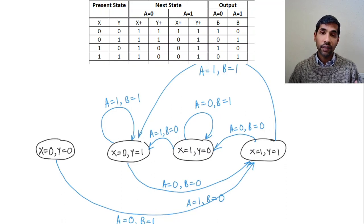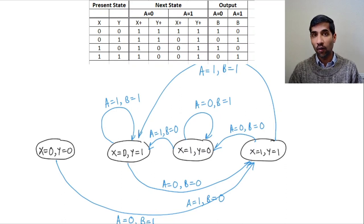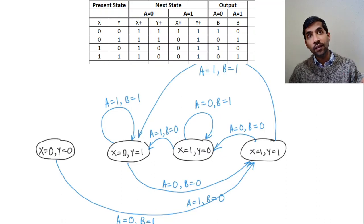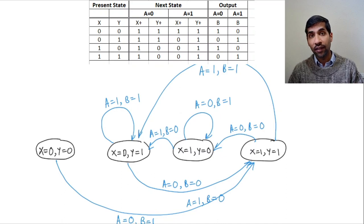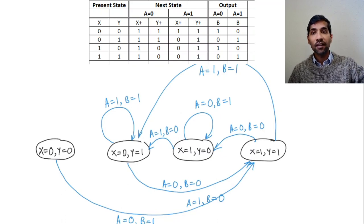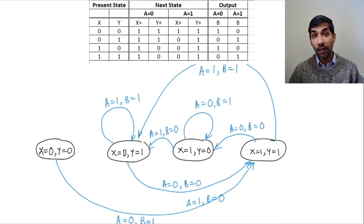What we are going to do in the next section of this week is we'll start with a state diagram. We'll say, this is the state diagram I want to achieve. And from there, we are going to make a state table, and then we'll make a truth table, and from there, we are going to make a sequential circuit that implements that particular state diagram.